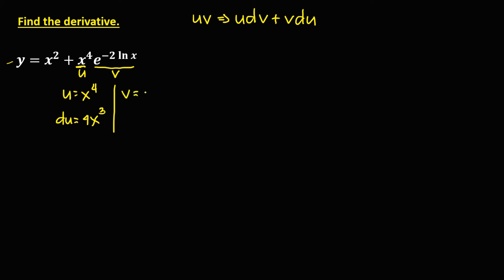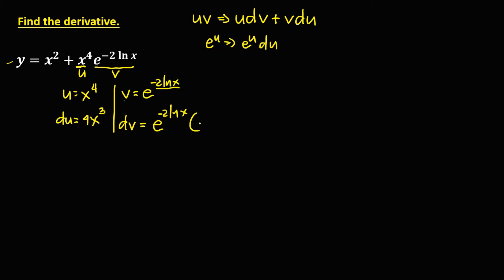Then v is e to the power negative 2 lnx. For the derivative of v, since the derivative of e to the power u is e to the power u times the derivative of u, we have e to the power negative 2 lnx times the derivative of negative 2 lnx. We bring down the 2, and the derivative of lnx is 1 over x, so we get negative 2 over x times e to the power negative 2 lnx. This is now dv.